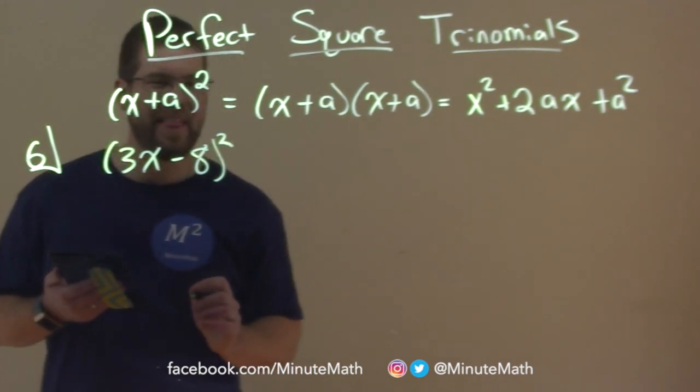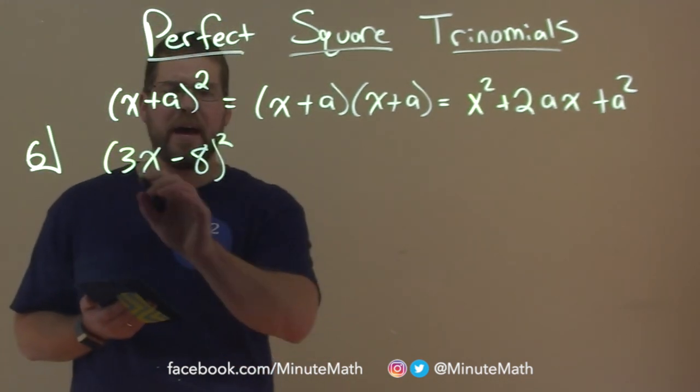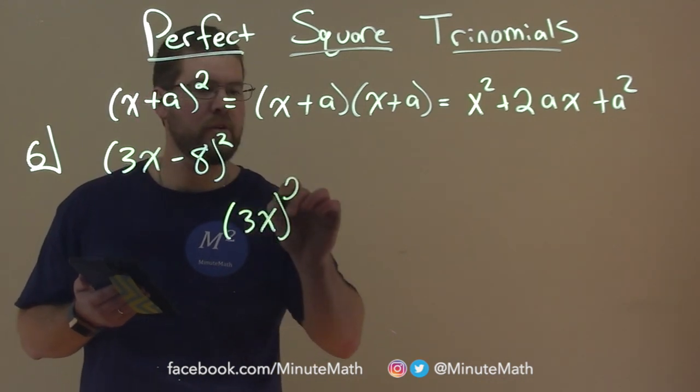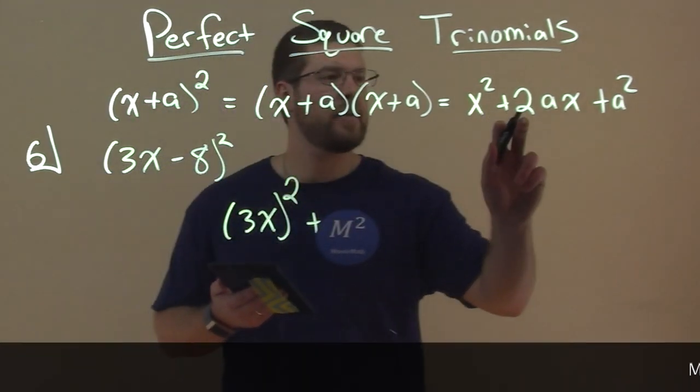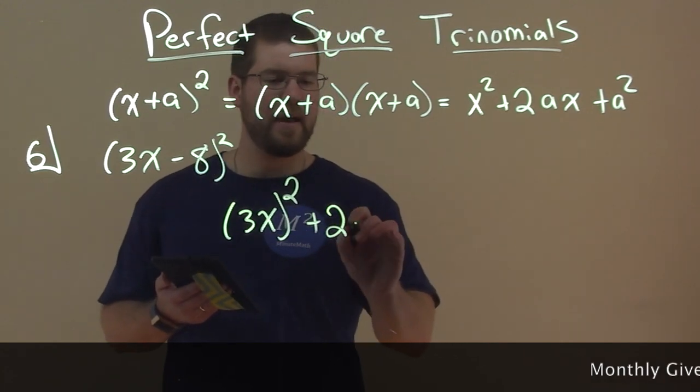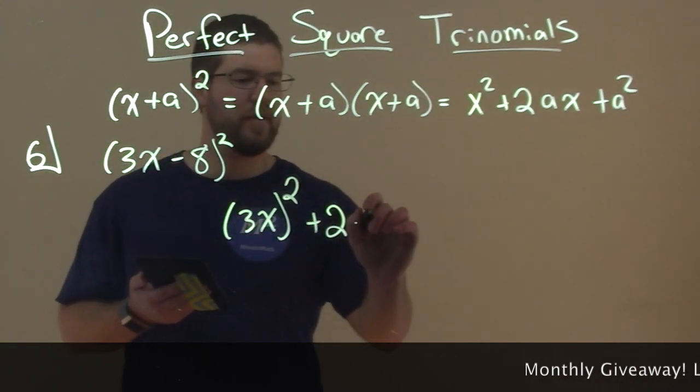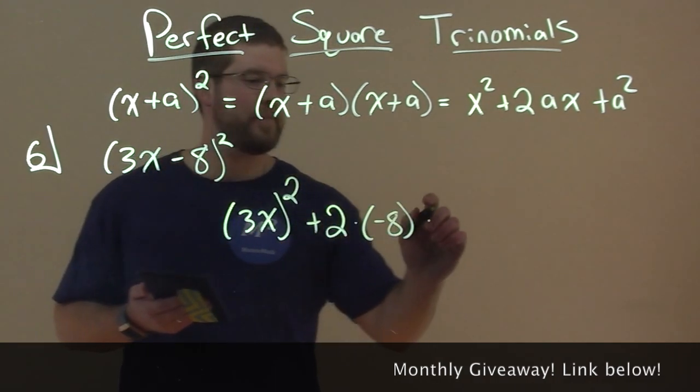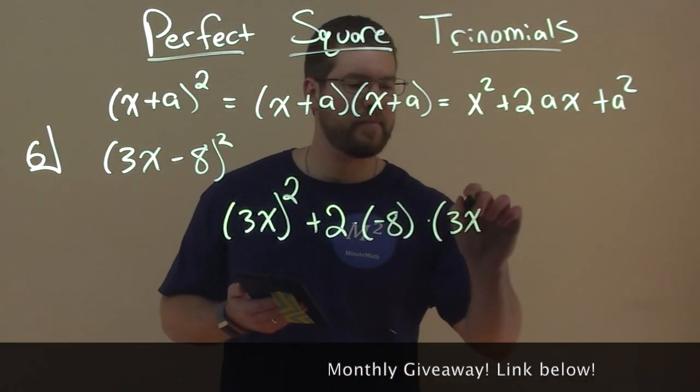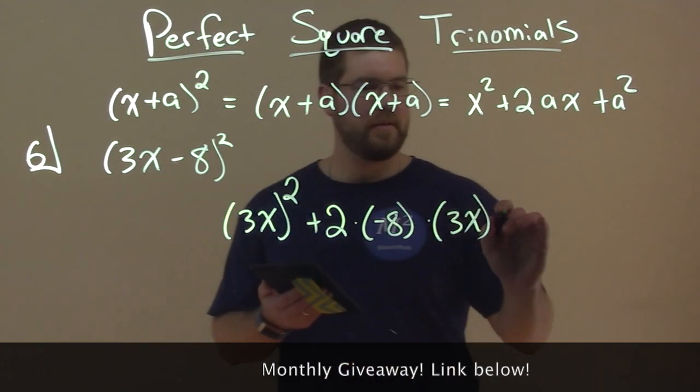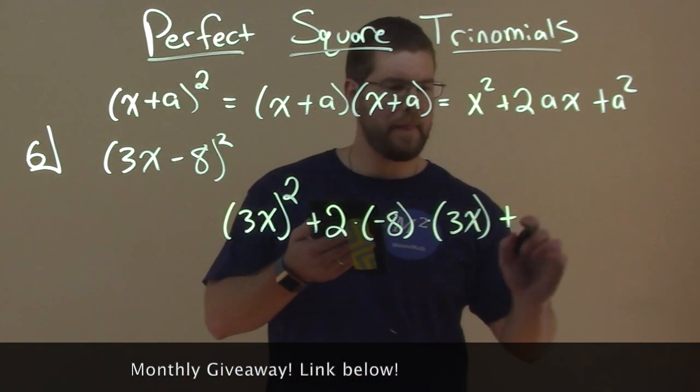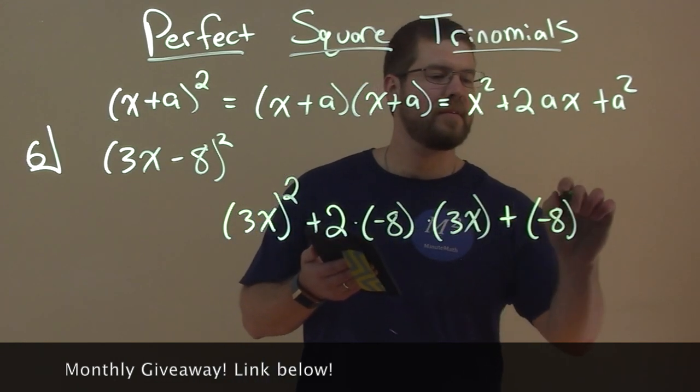So multiplying that out here, we have 3x, the first term, squared. Plus 2 times a, which here is -8, times x being the first term, which is 3x. Then plus the last term squared, so it's (-8)².